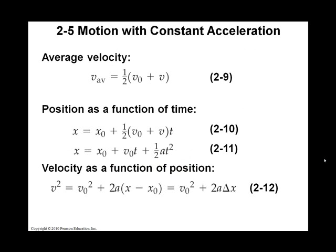We can combine the formula for average velocity, which is just one-half of final velocity plus initial velocity, with our position function, and we can come up with another one.